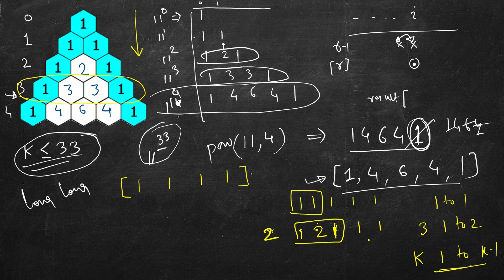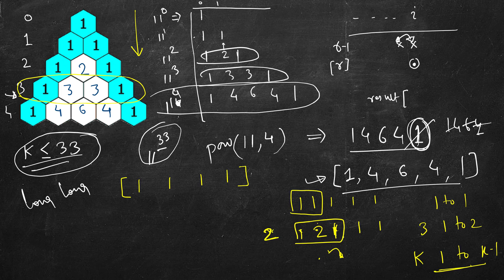We start from the right end since we're modifying each value to equal itself plus the previous value, so we move right to left. At the current position, one was there, then we add two to get three. Then we move here — two was already here, add the previous value one, so it becomes three. The rest remain one, giving us one three three one.